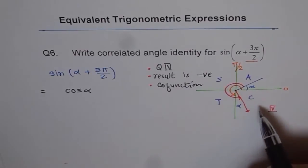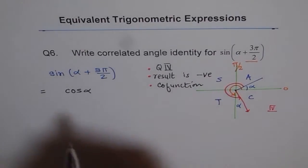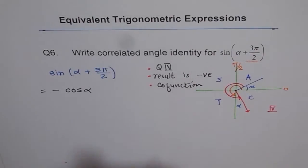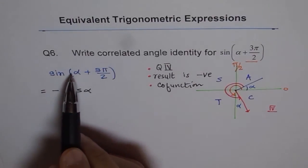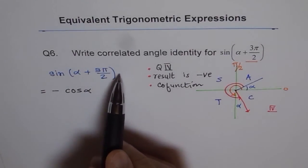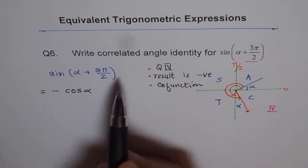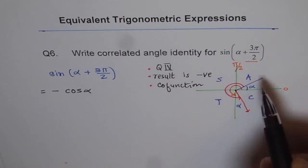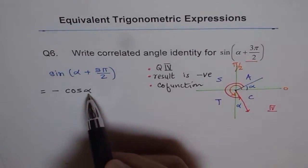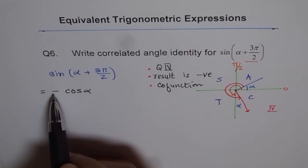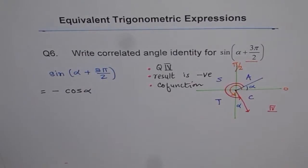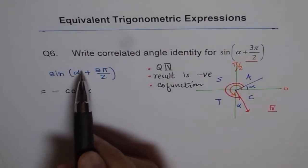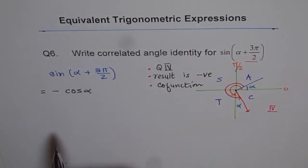Now, cos of alpha in quadrant 4 is positive, not negative. To make it negative, we have to write a negative sign. So sine of alpha plus 3 pi by 2, which gives us a negative value, is equal to negative of cos alpha. Cos alpha will always be positive since alpha is an acute angle, so we have to put that negative here. Therefore, sine of alpha plus 3 pi by 2 equals minus cos alpha.